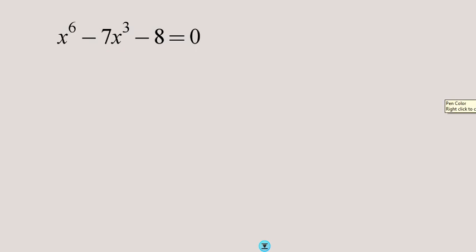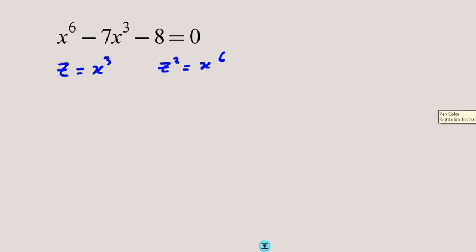Let's take another example. Again we notice the same structure: three terms, one a constant, and two terms with the same base where one power is double the other. So immediately z equals x cubed, and mentally you know that z squared equals x to the 6. You don't have to write the second step, but it is there for explanation. Writing out the equation gives z squared minus 7z minus 8 equals 0.